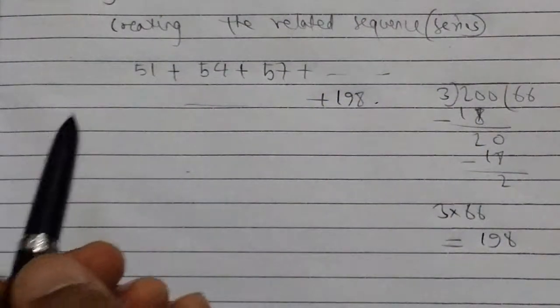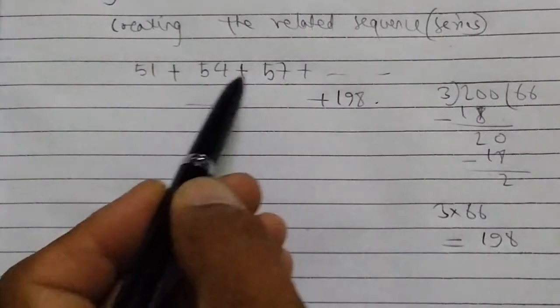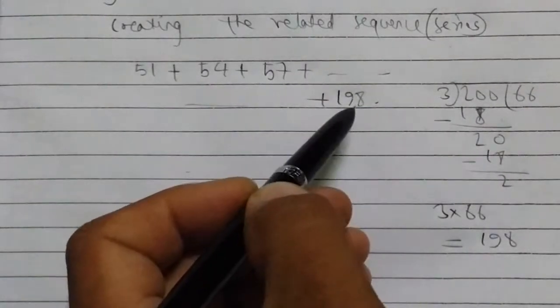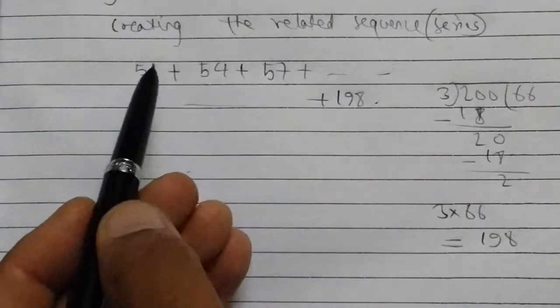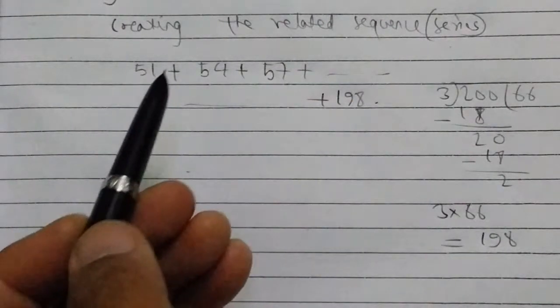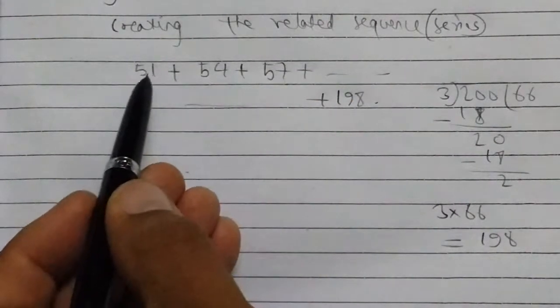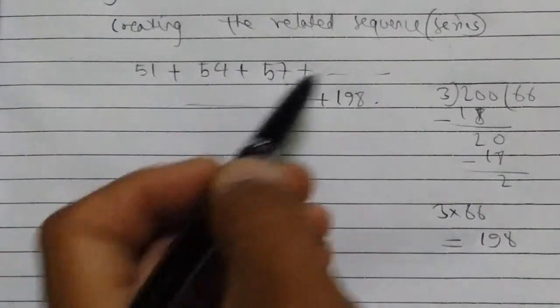So the sequence is: first number is 51, then 54, then 57, and the last number is 198. The first term is 51 which is 17 times 3. So 51, then 54, then 57.